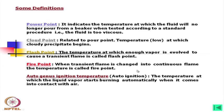That point is called the autogenous ignition temperature — the temperature at which liquid vapor starts burning automatically when it comes into contact with air. After the fire point, vapor will continue to come, and when that vapor contacts the air it will automatically catch fire. This may happen where temperatures are very high, so we have to cool the oil and ensure it does not reach the auto-ignition point.